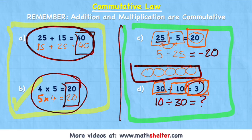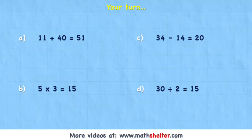That is understanding the commutative law. Have a little go at looking at these four examples and see if you can prove that addition and multiplication are commutative but subtraction and division are not. Press pause on the video now. Have a little look at this and see what you can discover. Good luck.